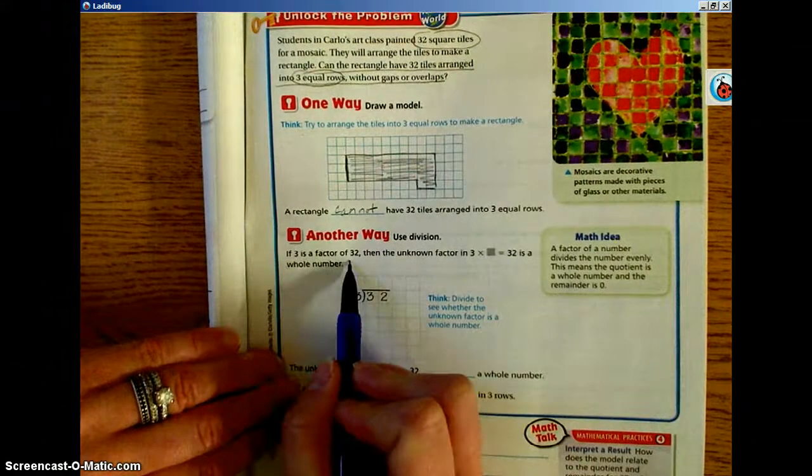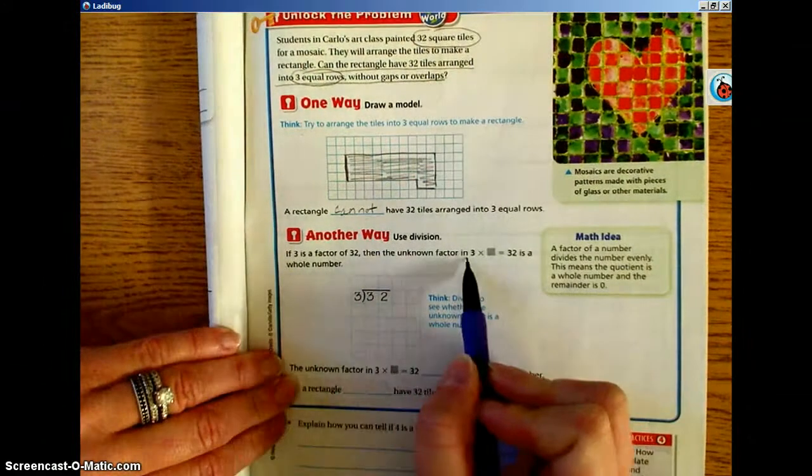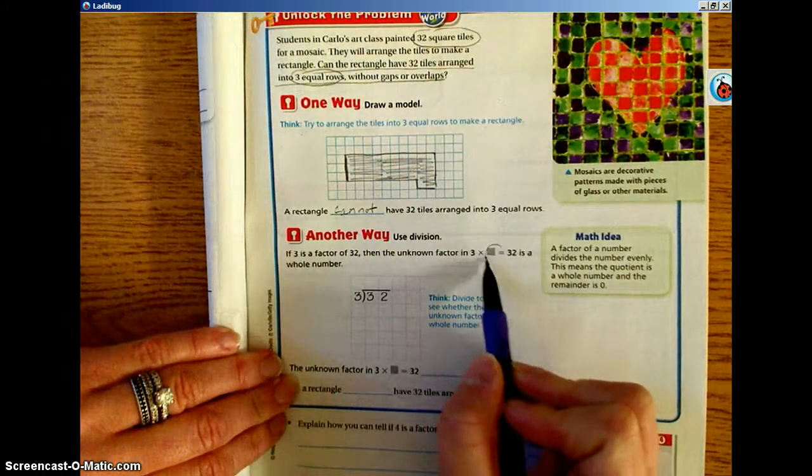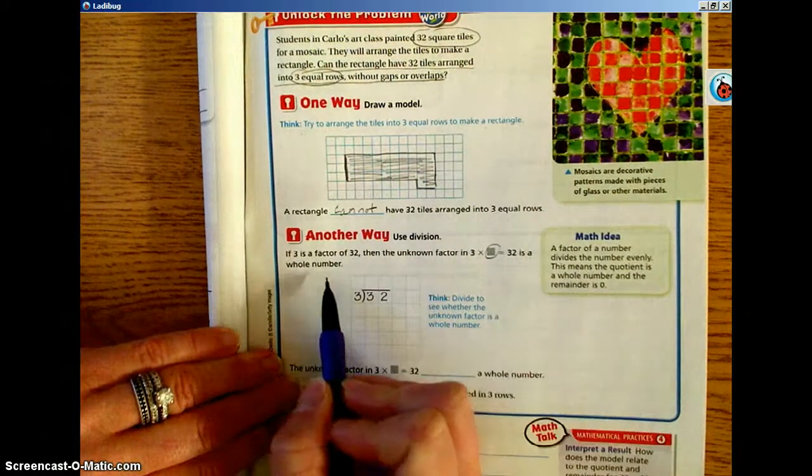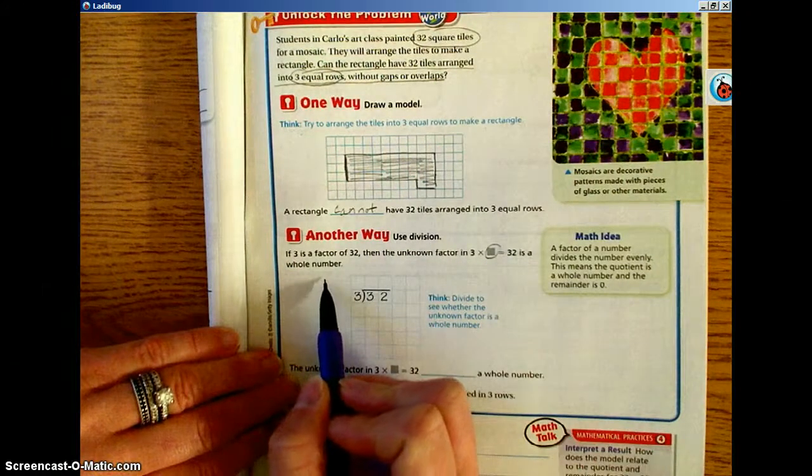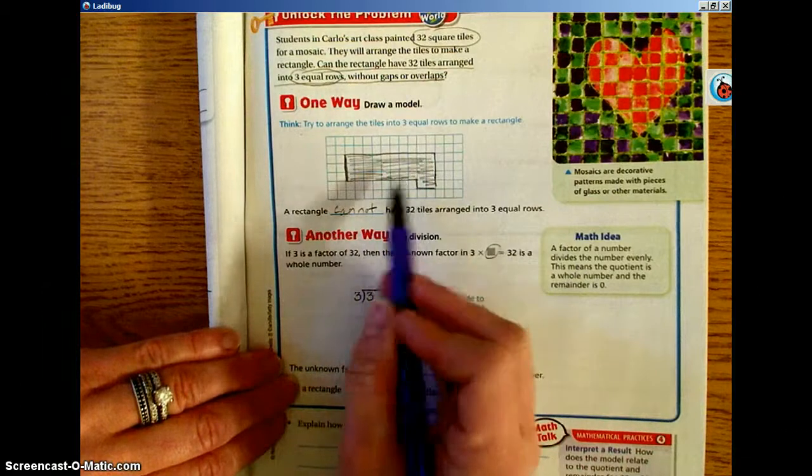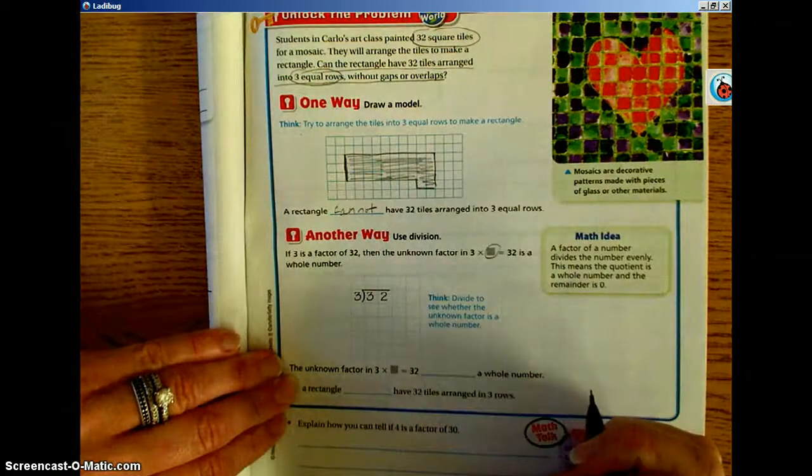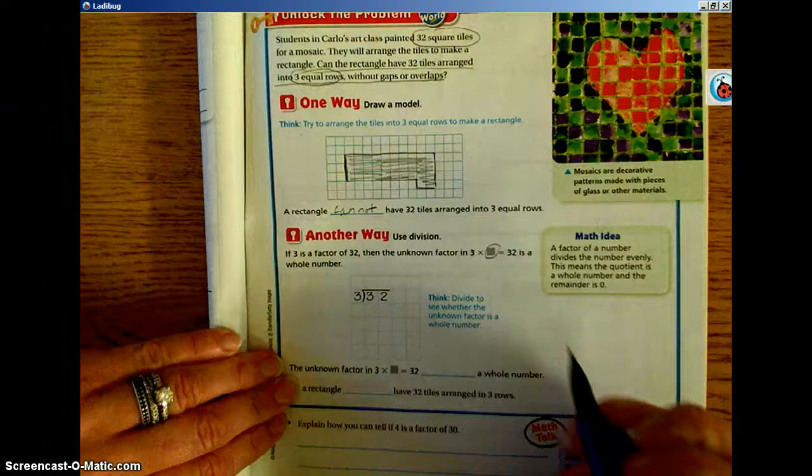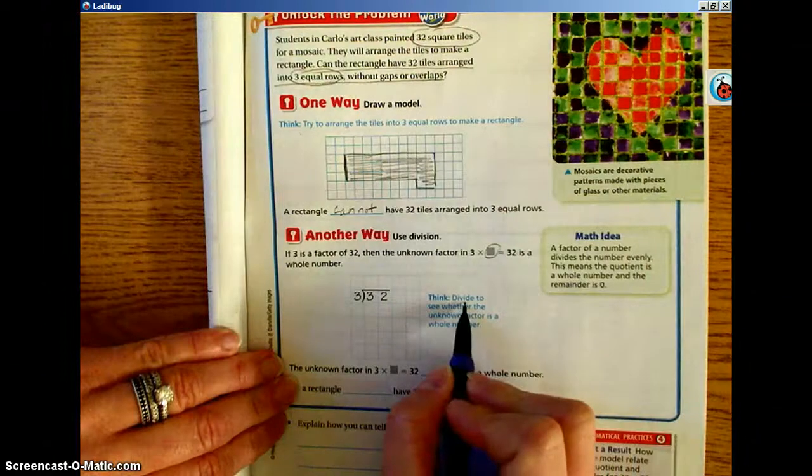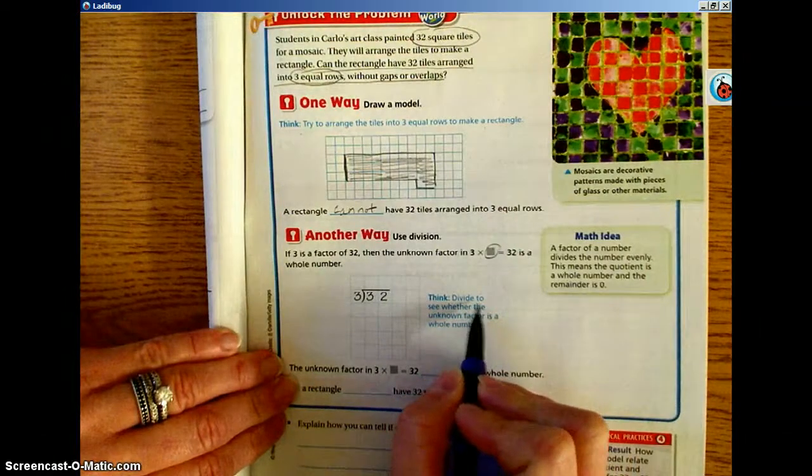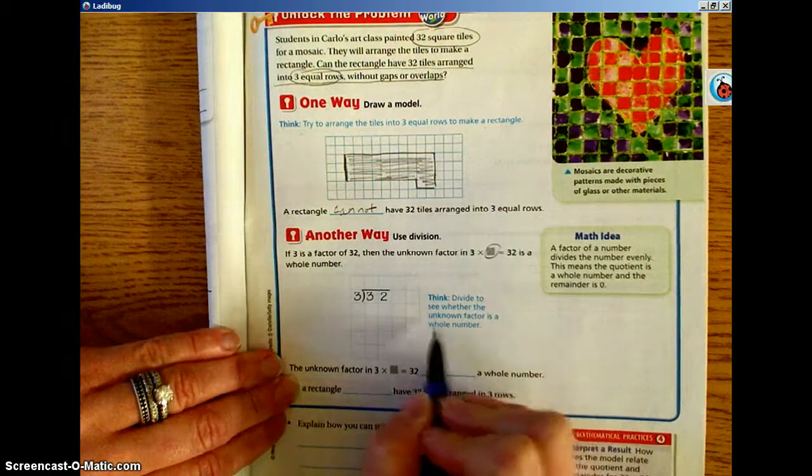Using that information that we just found, if 3 is a factor of 32, then the unknown factor in 3 times something equals 32 is a whole number. Well we already decided that 3 can't be divided equally into 32.